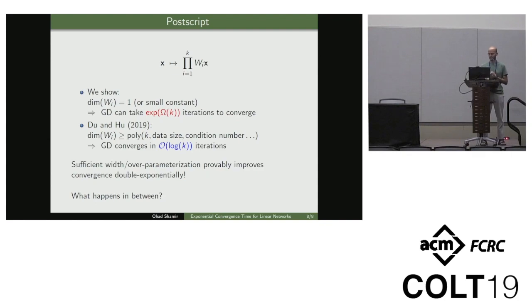However, that still leaves the question of what happens in between. So if you make the network extremely wide, things are okay. If the network is narrow, things are not okay. What happens for more moderate widths, what happens in between? Is there a sharp phase transition? Is it more gradual? And I think that might be an interesting open question to think about. That's it. Thanks.